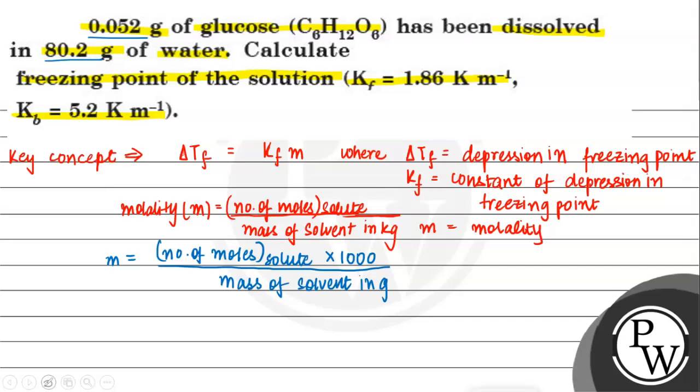Moving on to the question, now we can see what is molecular mass of glucose. Molecular mass of glucose, we have seen the formula C6H12O6: 72 plus 12 plus 96, which will be equal to 180 grams per mole. This is our molecular mass of glucose.